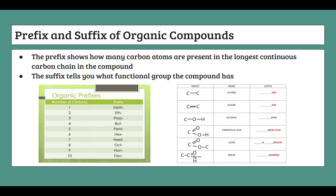Now let's go right into the naming process. The basic components of naming organic compounds involve prefixes and suffixes. The prefix shows how many carbon atoms are present in the longest continuous carbon chain in the compound. The suffix tells you what functional group the compound has. You will have to memorize the naming conventions, but they are actually quite easy.